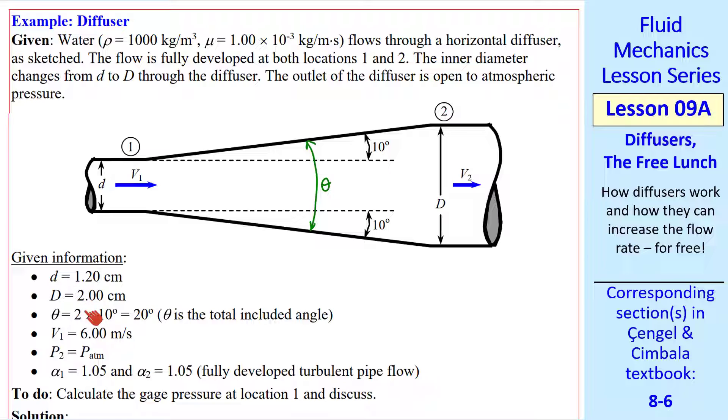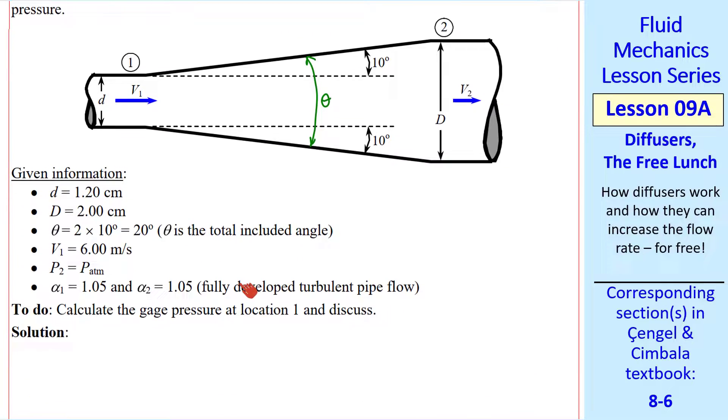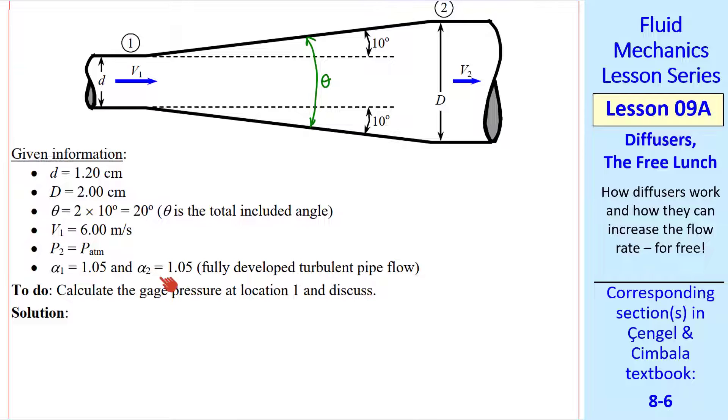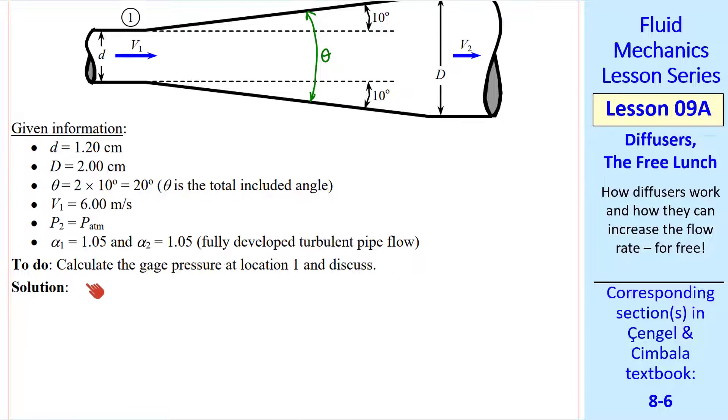Here are some values of D and capital D. The average speed at location one. And P two discharges into the atmosphere. So P two is P atmosphere. We assume fully developed turbulent flow. So we'll use alpha one and alpha two as 1.05. We want to calculate the gauge pressure at location one.